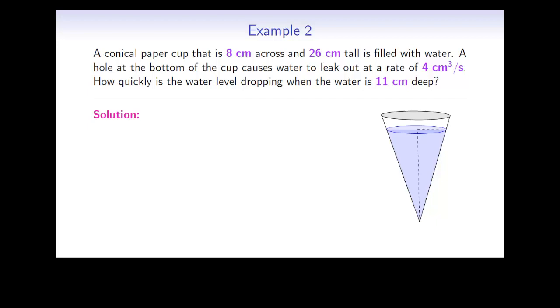In the questions that we've seen so far, we've been given all the rates of change that we need, with the exception of the one we're solving for. In some problems, there are other quantities that show up and we're not given that information. Let's take a look at an example where we have to do some extra work to find all rates of change. A conical paper cup that is 8 centimeters across and 26 centimeters tall is filled with water. A hole at the bottom of the cup causes water to leak out at a rate of 4 centimeters cubed per second. How quickly is the water level dropping when the water is 11 centimeters deep? As the water drips out the bottom of the cup, the volume of water and the water level are both decreasing.